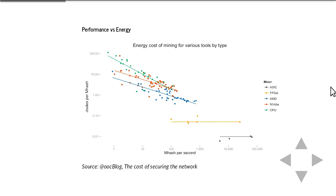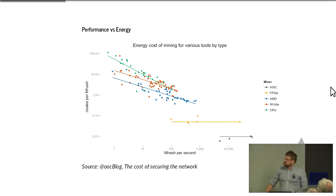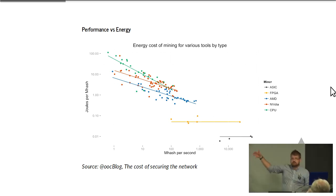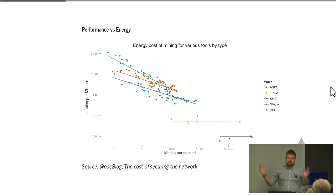A nice summary of this is a graph where the y-axis shows joules per megahash for SHA-256 double-hash, which is the proof-of-work algorithm for Bitcoin, and the x-axis shows megahashes per second. You've got the green CPUs, red and blue NVIDIA and AMD GPUs, yellow FPGAs — chips you can reprogram to implement specialist architectures — and then black ASICs, specialized chips that dominate Bitcoin mining today. This graph shows that both performance and energy efficiency improve if you're willing to work on weirder and weirder hardware.